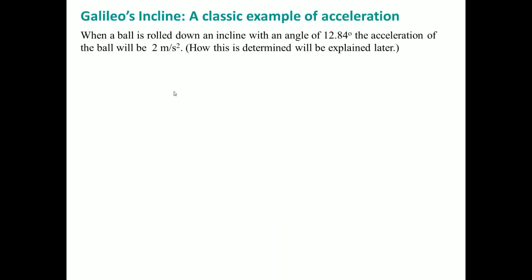Now we're going to talk about Galileo's incline — a classic example of acceleration. A ball is rolling down an incline with an angle of 12.84 degrees. The acceleration of the ball is 2 meters per second squared. The ball goes down the incline where the angle is equal to 12.84 degrees.